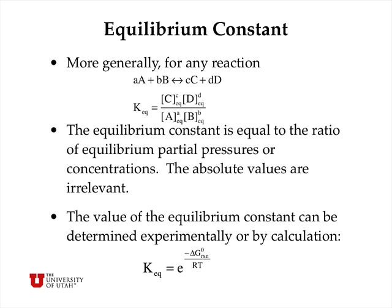So more generally, for any chemical reaction, we can write K as a ratio of concentrations or partial pressures of products divided by reactants, all raised to the appropriate stoichiometric power. And this equilibrium constant is equal to the ratio of equilibrium partial pressures or concentrations. The absolute values of the concentrations are actually irrelevant. It's the ratio that counts. And the value of the equilibrium constant can be determined experimentally or by calculation if we know the ΔG° for the reaction.